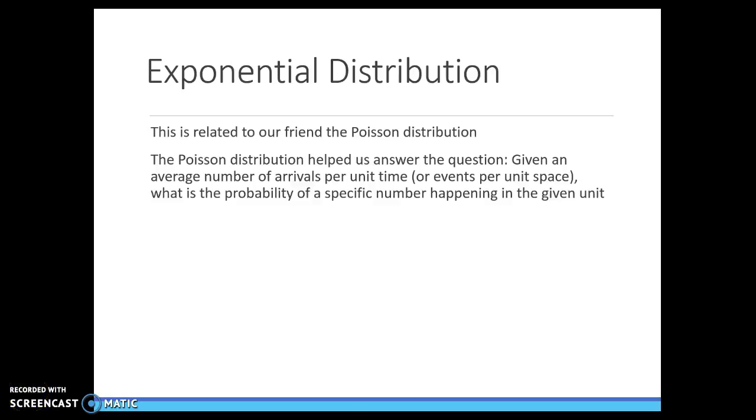The final continuous probability distribution we're going to talk about is the exponential distribution. This one is similar to our Poisson distribution from the discrete distributions that we've already talked about.